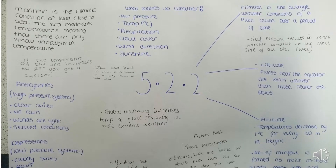5.2.2 looks at factors which create variations in the weather and climate at different scales within the UK. Weather is the day-to-day condition of the atmosphere and the environment outside — rain, sun, hail, sleet, snow, wind — and any changes day by day.